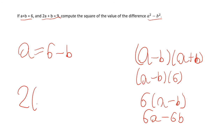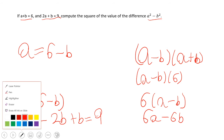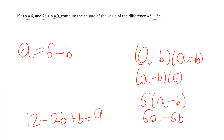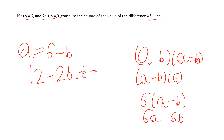Now we can just plug in a as 6 minus b. So 2 times 6 is 12 minus 2b, and we're adding b. All of this equals 9. So 12 minus 2b plus b equals 9.